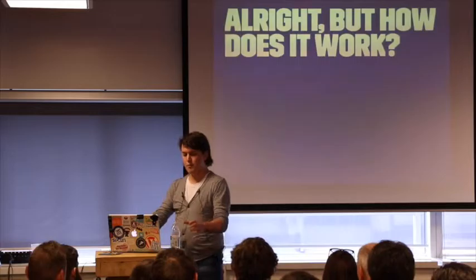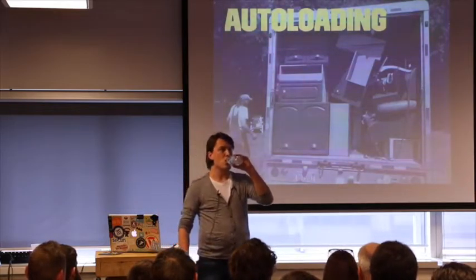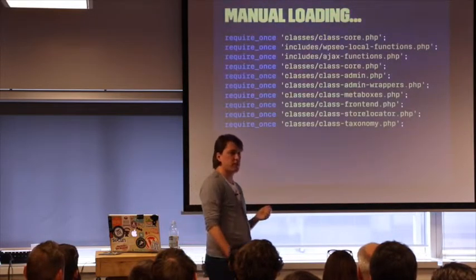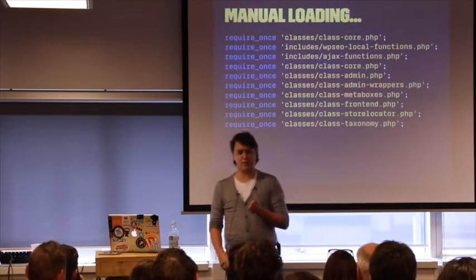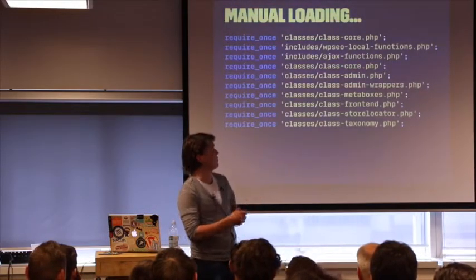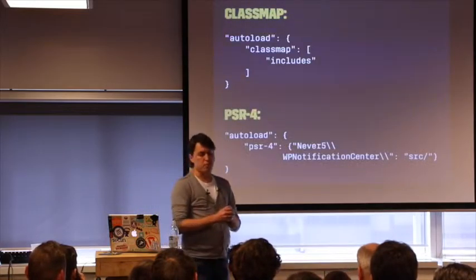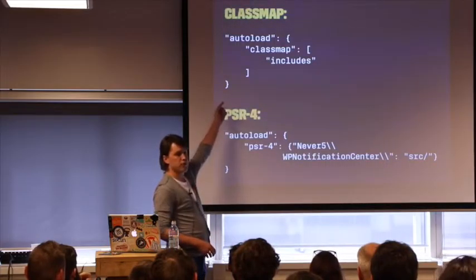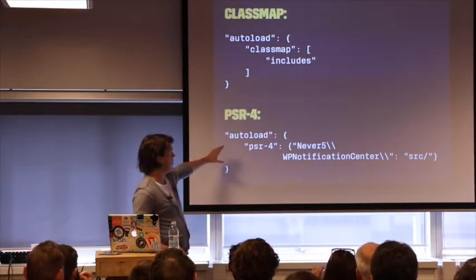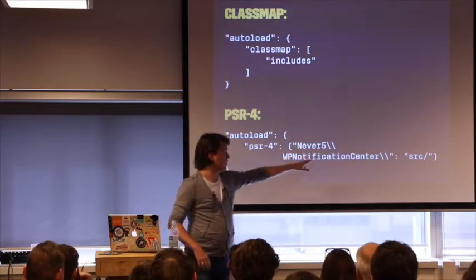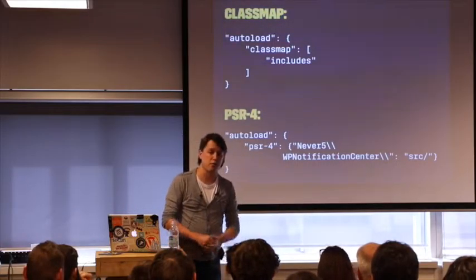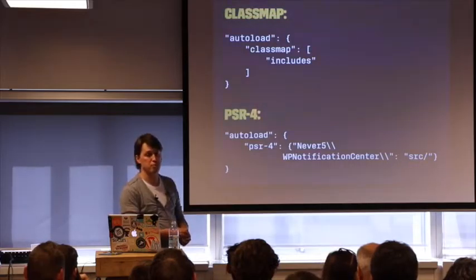How does it actually work? We're going to start with autoloading. Does this look familiar to anyone? It works — nothing wrong with it. It's a bit boring and a bit maintenance-heavy, but it works. With Composer, the most commonly used way to do it with WordPress plugins is PSR-4, which is far more elegant. You just define the namespace and then the map where your files live. But since it's a namespace, it requires PHP 5.3, and we all know that WordPress is still compatible with PHP 5.2.